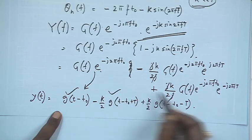Taking the inverse Fourier transform, I get three pulses again: y(t) = g(t − t_0) − k/2 · g(t − t_0 + T) + k/2 · g(t − t_0 − T). Whether the non-ideality is in the amplitude or in the phase, we get a similar effect: distortion that broadens the pulse and creates inter-symbol interference. This is called dispersion.